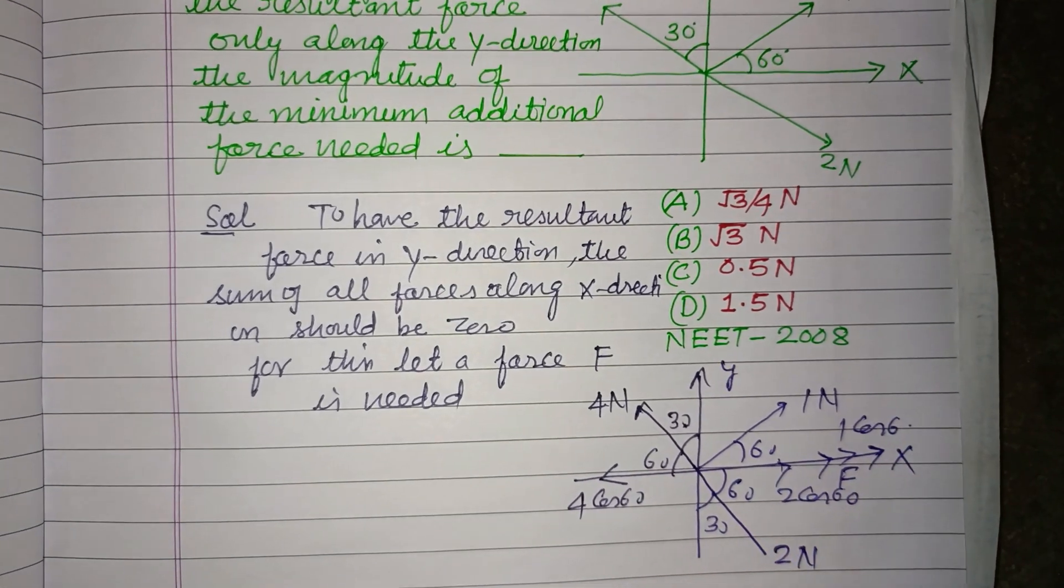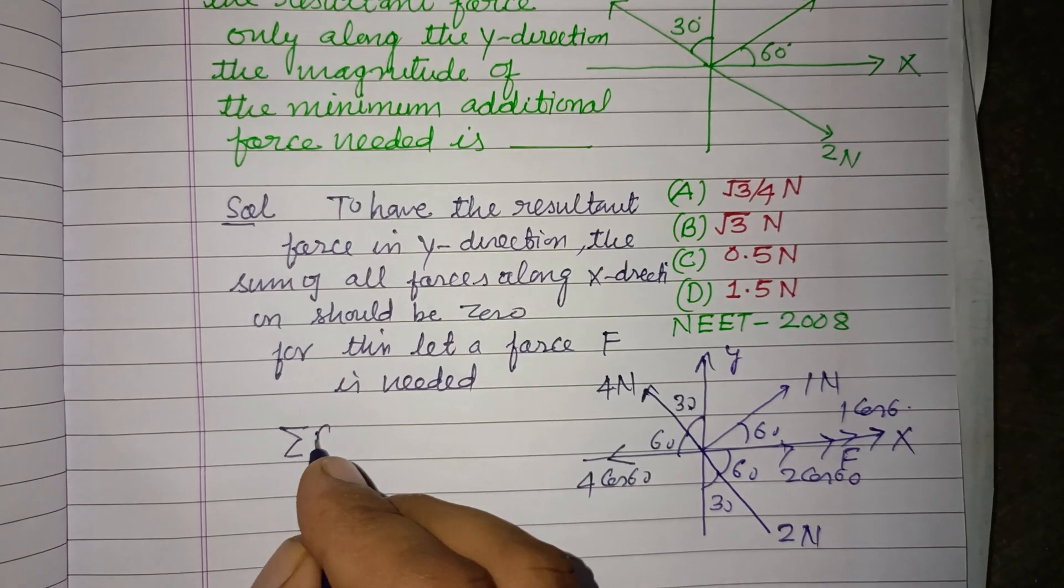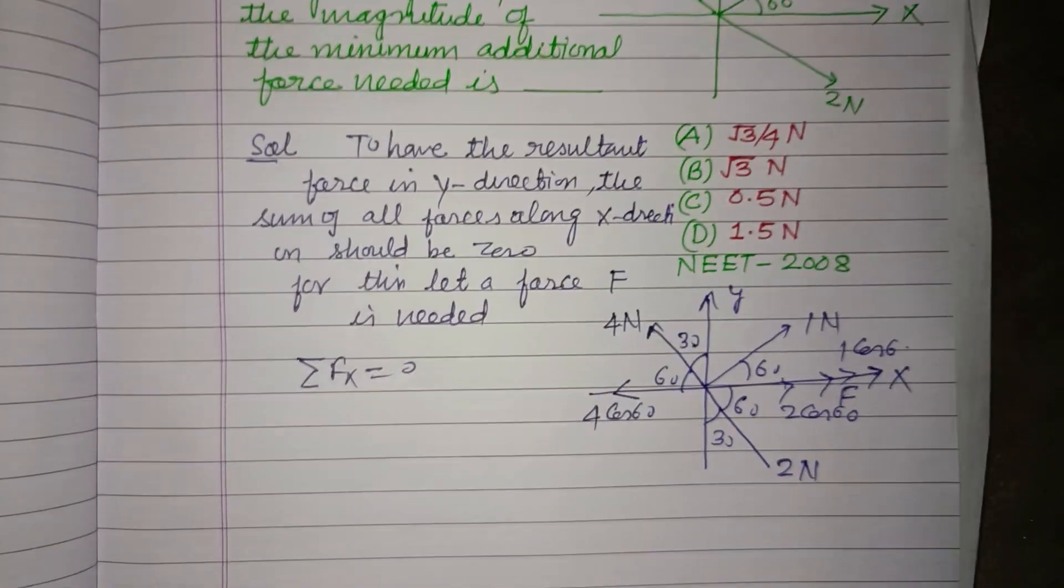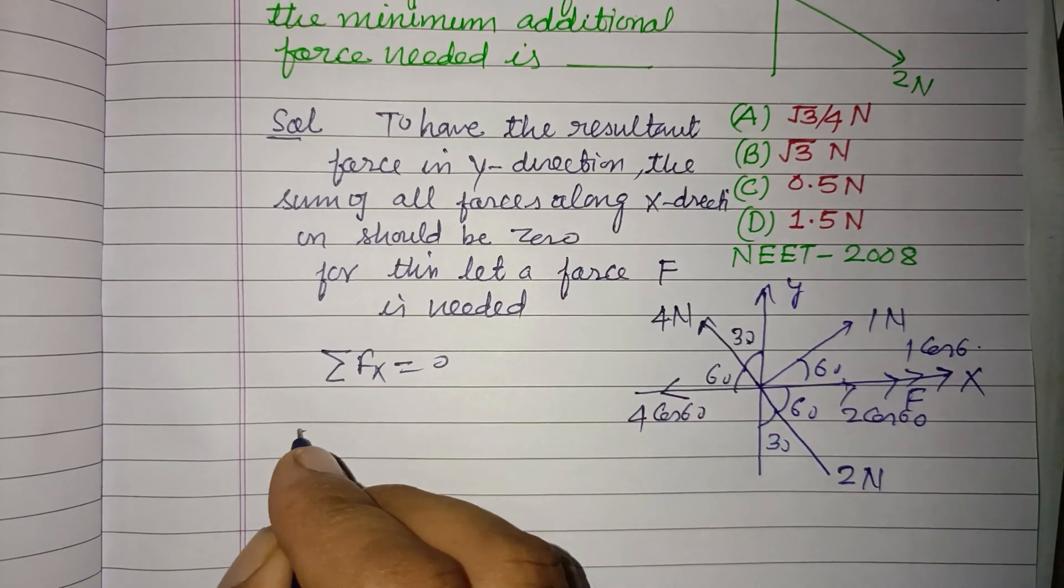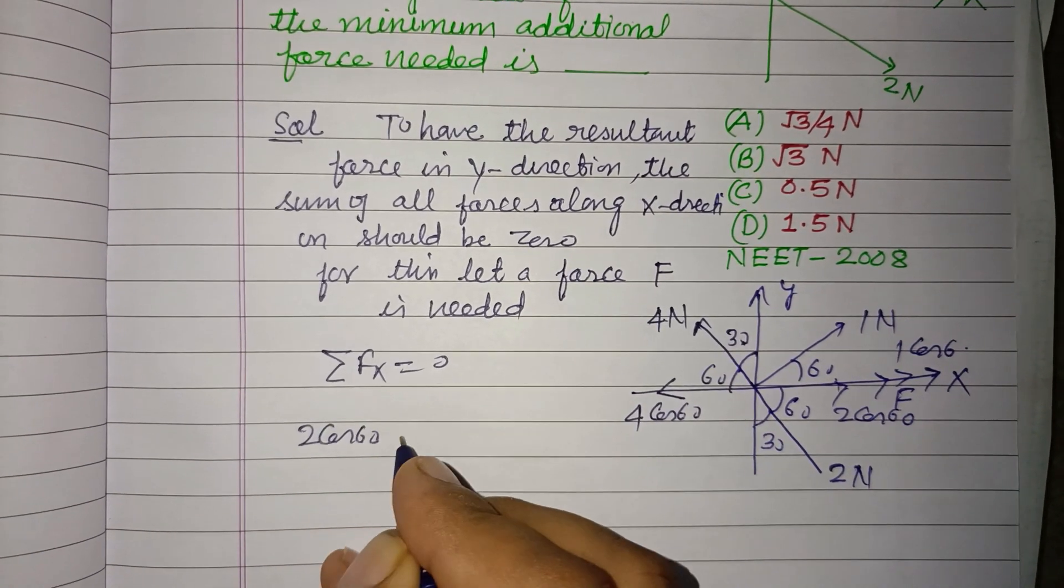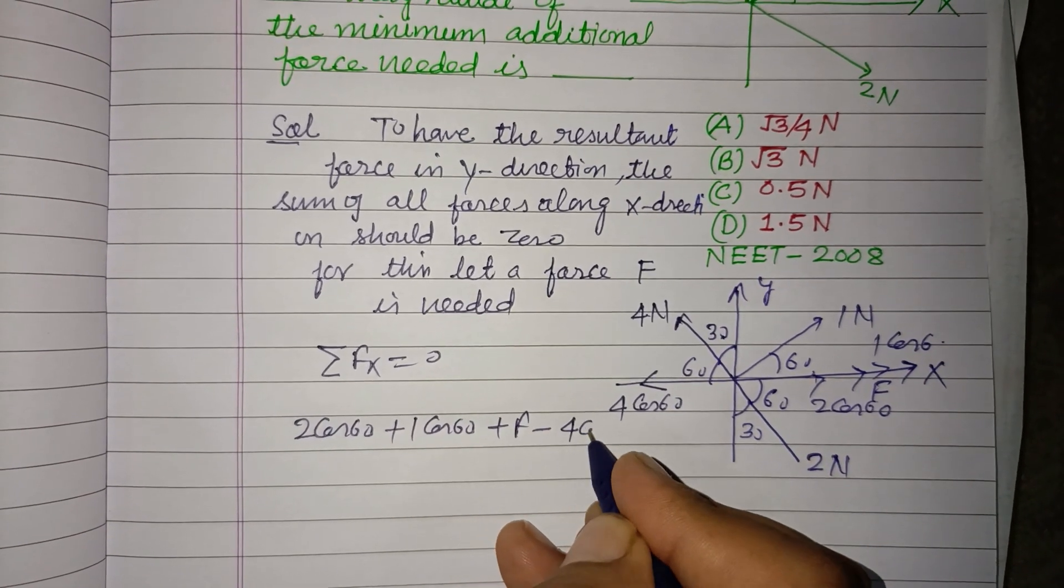So sigma Fx should be zero. So here 2 cos 60° plus 1 cos 60° plus F minus 4 cos 60°.